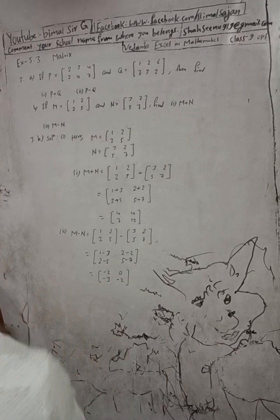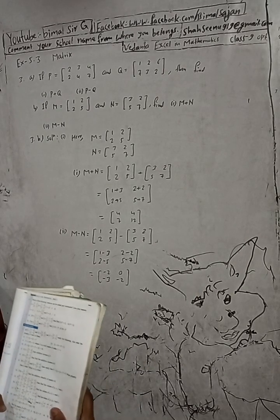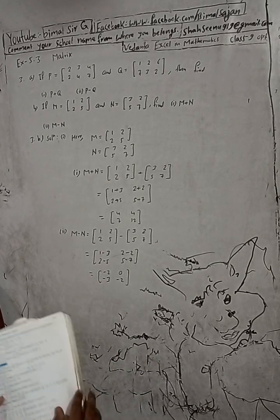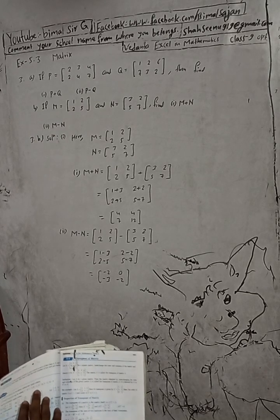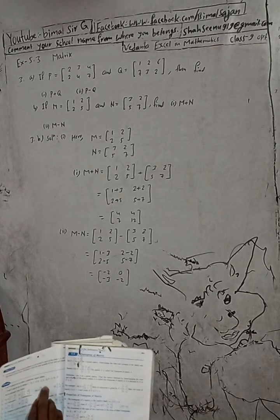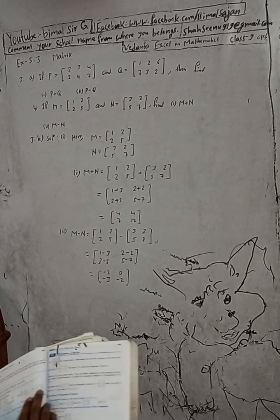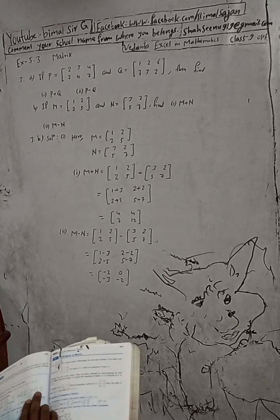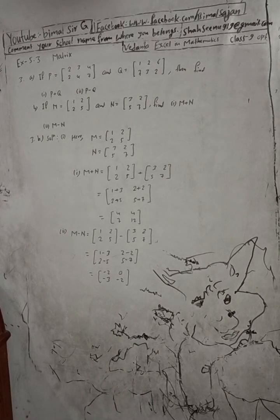So this is the solution for number 2. To confirm: 3B number 1 gives [4, 4 / 7, 12] — correct. Number 2 gives [-2, 0 / -3, -2] — correct answer. This is the complete solution of question number 3.